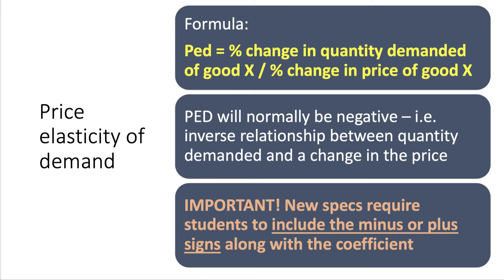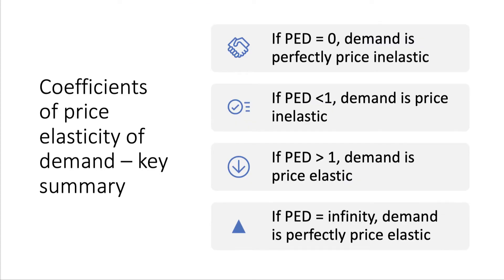There's been an important change to the exam specifications. Students are now required to include the minus or plus signs along with the coefficient. The coefficient tells us whether demand is responsive or fairly unresponsive. If the coefficient is zero, demand is perfectly price inelastic; less than one, price inelastic; more than one, price elastic; infinity, perfectly price elastic. Remember to put the word 'price' before 'elastic' or 'inelastic' — saying demand is simply elastic or inelastic is not accurate enough under the new exam specifications.